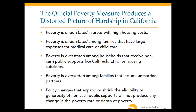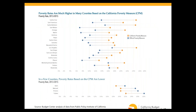Poverty is also overstated among families that include unmarried partners, since they're considered separate families under the official measure. And very importantly for informing policy, any policy changes that expand or shrink eligibility or generosity of non-cash public supports will not produce any change in the poverty rate as measured under the official measure — meaning you won't be able to see whether the policy has had any impact on economic security.